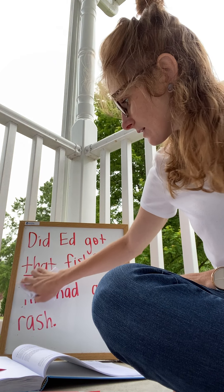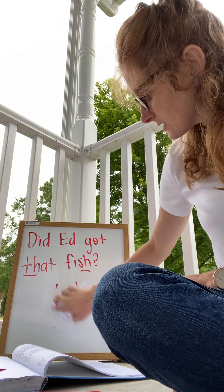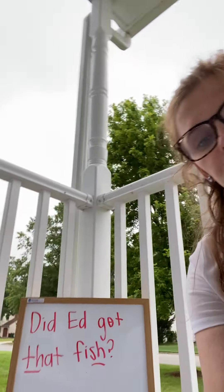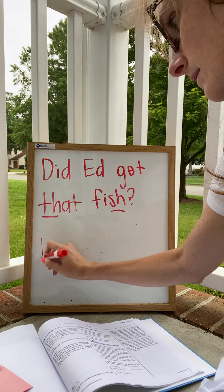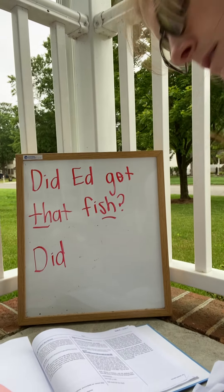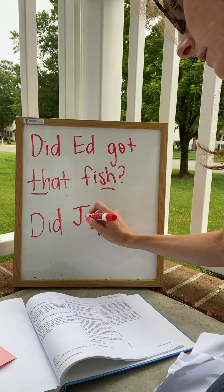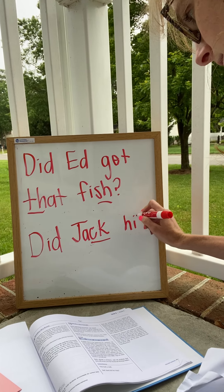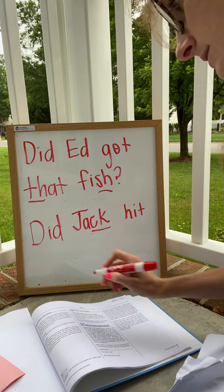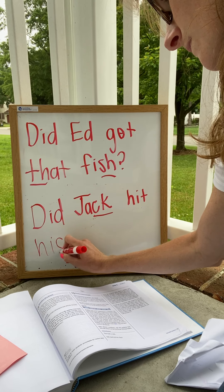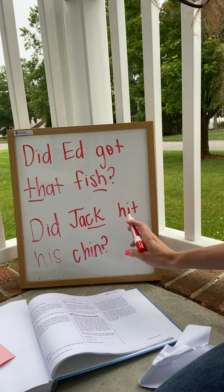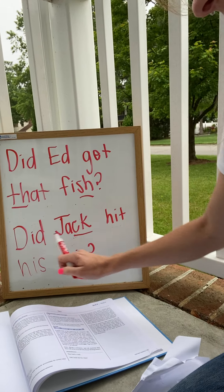All right, let me erase this bottom one, and then we're going to do one more together, and this time it is a question, so we're going to use a question mark. We're going to start with 'did.' Jack - we hear that k at the end of the word. Did Jack hit his chin? Read it again: Did Jack hit his chin? Good job. Now, once you write your sentences, send them to me so I can see how you did.